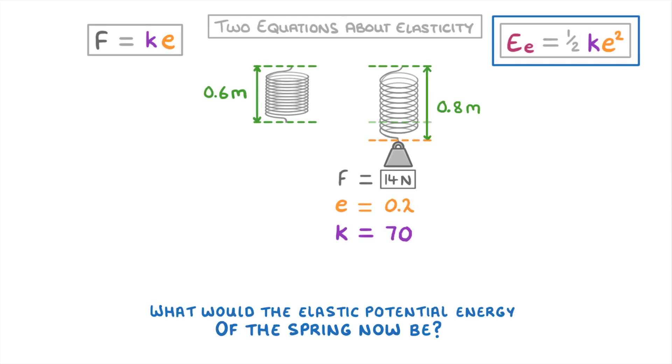And it's a bit simpler, because we've already worked out the spring constant and the extension. So all we have to do is plug the values into the equation. So we get one half, or 0.5, times 70, times 0.2 squared, which gives us 1.4 joules.